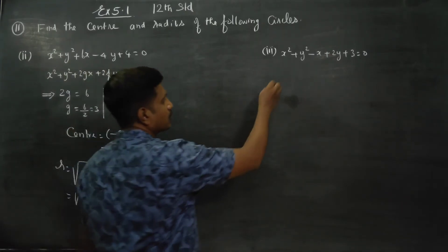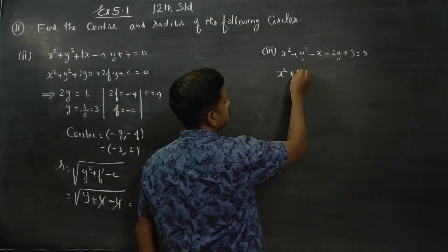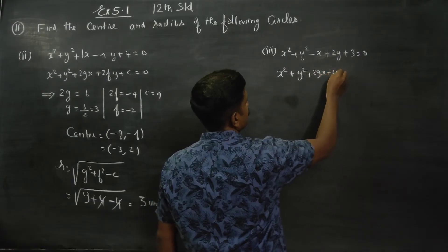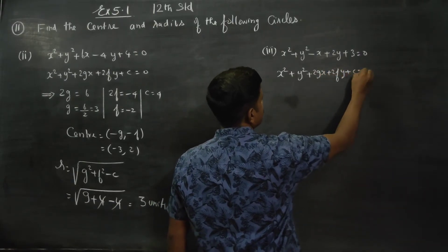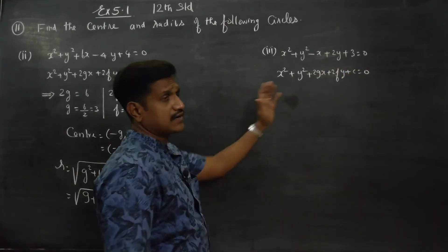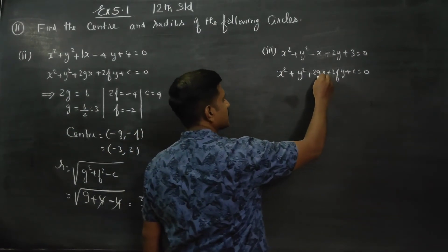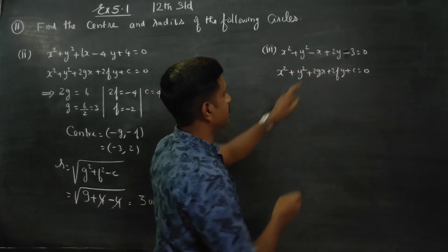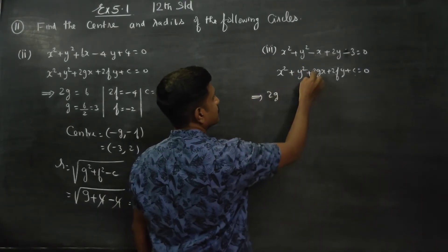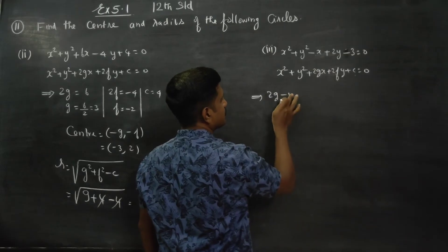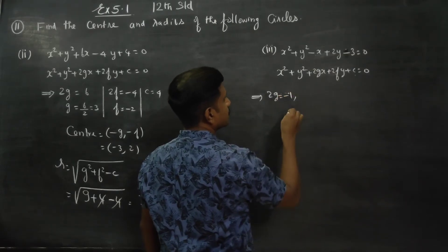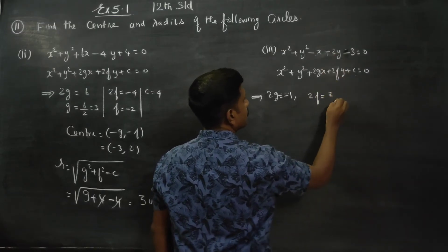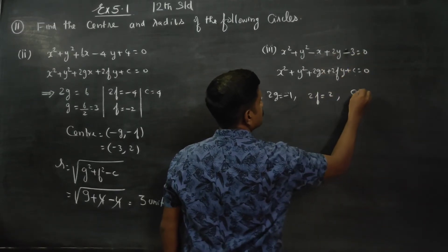Coming to this sum, I am going to match the equation with the standard form x² + y² + 2gx + 2fy + c = 0. I am matching with the standard form of the circle. This is the standard equation of the circle. When comparing, my 2g is equal to minus 1, my 2f is equal to 2, and my c is equal to minus 3.